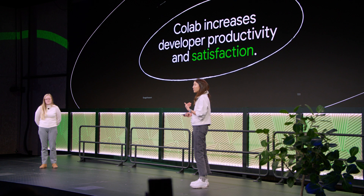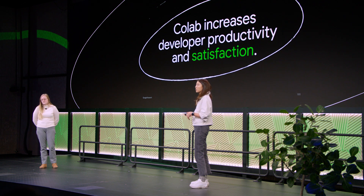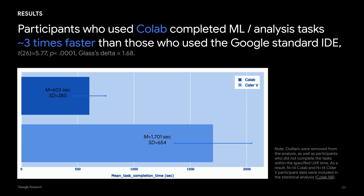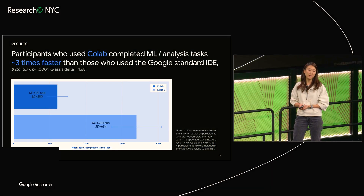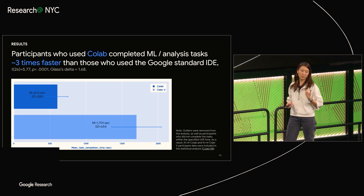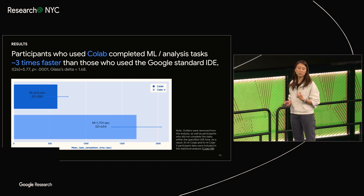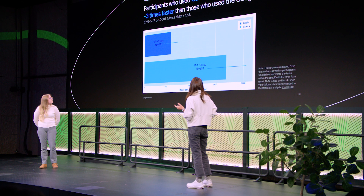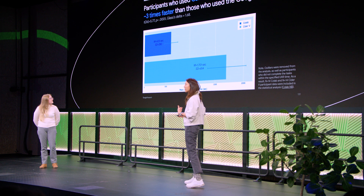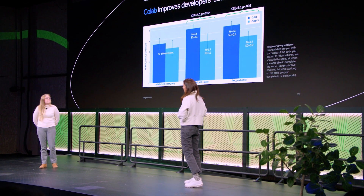The TLDR here is that Colab increases developer productivity and satisfaction based on the controlled experiment we conducted. What we did was have Google engineers assigned to one of two study conditions and have them go through ML and data analysis tasks. We measured task completion time, satisfaction, and perceived productivity. Not surprisingly, the engineers who used Colab completed the given tasks three times faster than those who used the Google standard IDEs. As you can see, the dark blue is Colab and the lighter one is the other Google standard IDE that we tested.